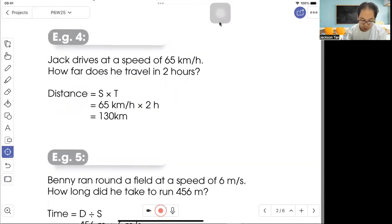Example four: at a speed of 65 km per hour, how far does it travel in two hours? So when they say how far, they are talking about distance. You can use the formula straight away. Distance is speed times time. So 65 km per hour times two hours equals 130 km. Make sure that the unit that you use is the same. So this is per hour, so it's time per hour.